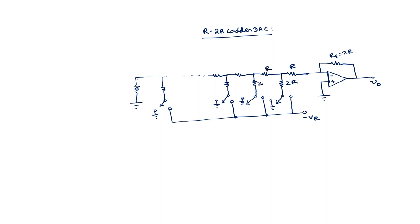The circuit has resistors arranged as: this is R, this is 2R, this is 2R, this is 2R, this is R, this is 2R, and so on — it continues in this pattern. At the end we have a 2R resistor. The bit inputs are LSB (D3), then D2, D1, and MSB. You can see that overall we have only 2 different resistors, R and 2R.